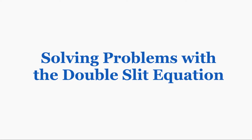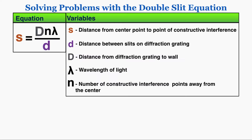This is the second part of a two-part lecture on the double slit equation. In this part we're just going to be using the equation that we proved in part one to solve problems. This is the equation and what each variable means. You can pause the video if you need to copy these down. I'm now going to show an animation that shows what each variable means visually.